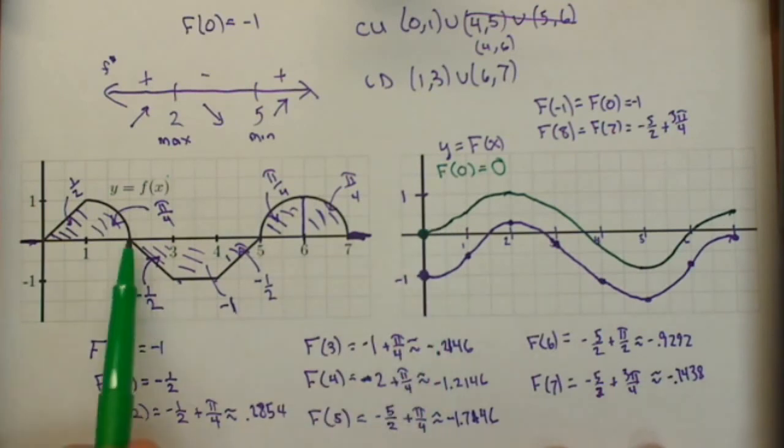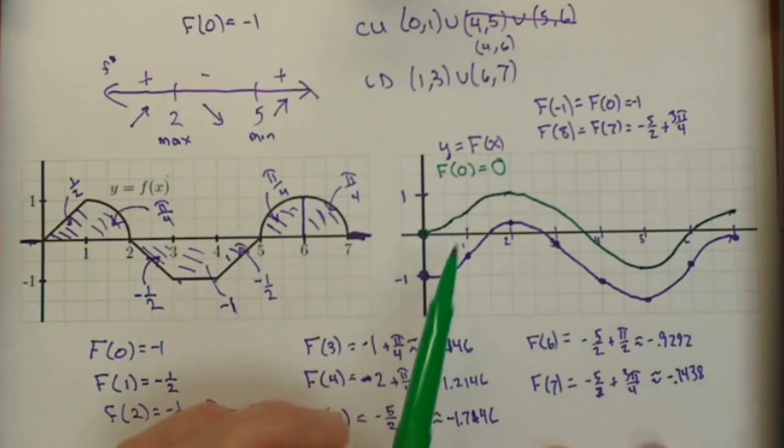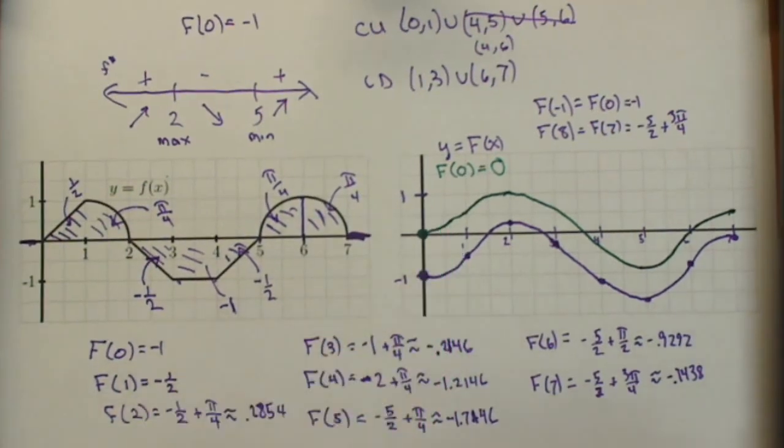Both these functions, the green and the purple, have the same derivative. But they are different functions. They differ by a constant. They differ by that initial condition.